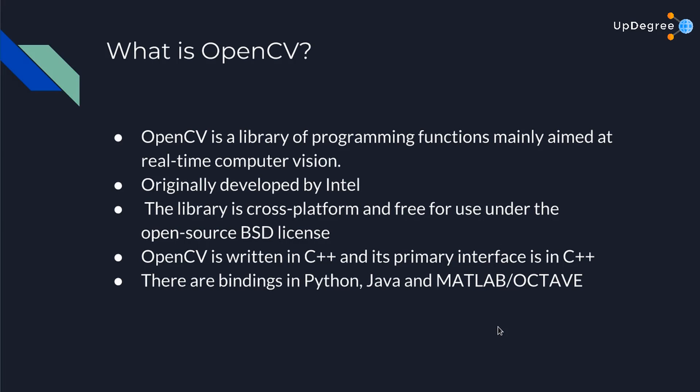Coming to the main question: what is OpenCV? OpenCV is a library of programming functions and modules that are mainly aimed at real-time computer vision. Computer vision is that domain of computer science which mainly deals with images and videos. We see our world in the form of video and process them as images, and the processing of these images and videos by a computer is called computer vision.